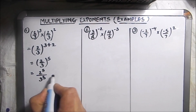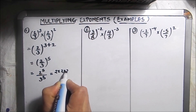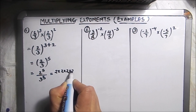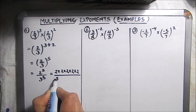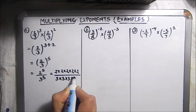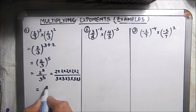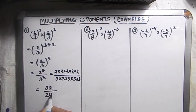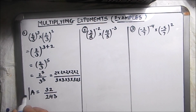So 2 to the power 5 is 2 times 2 times 2 times 2 times 2, over 3 times 3 times 3 times 3 times 3, which gives us 32 over 243. So this is our final answer.